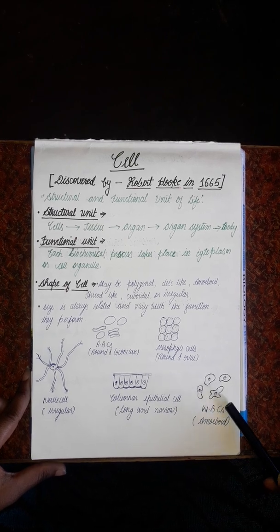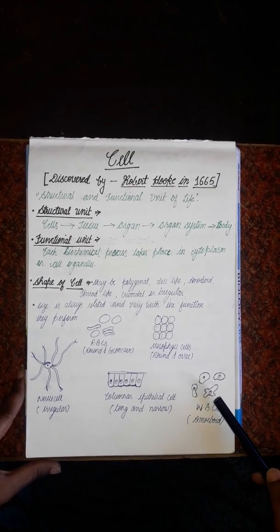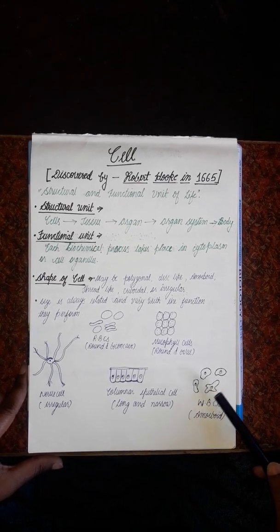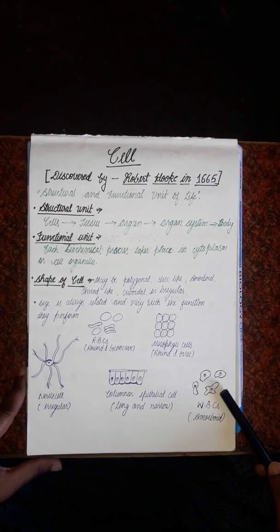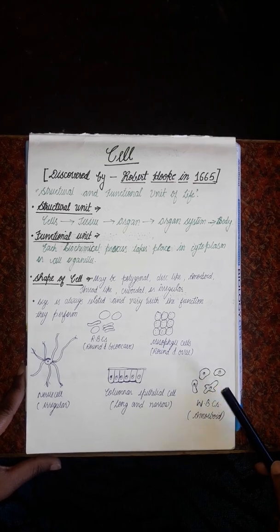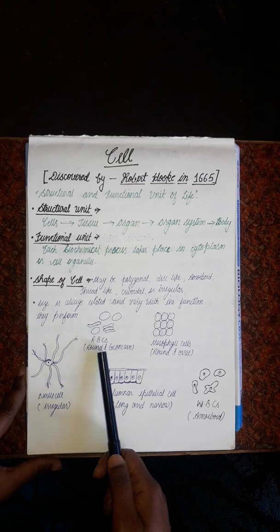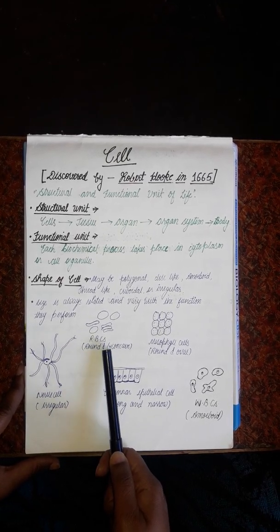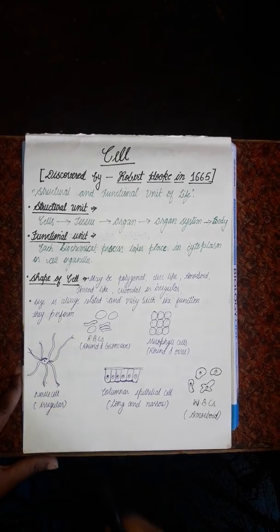Next are WBCs — white blood cells. They are found in our blood, are amoeboid in structure, and their main function is to fight against germs. RBCs — red blood cells — are also found in blood, and their function is the transportation of oxygen.